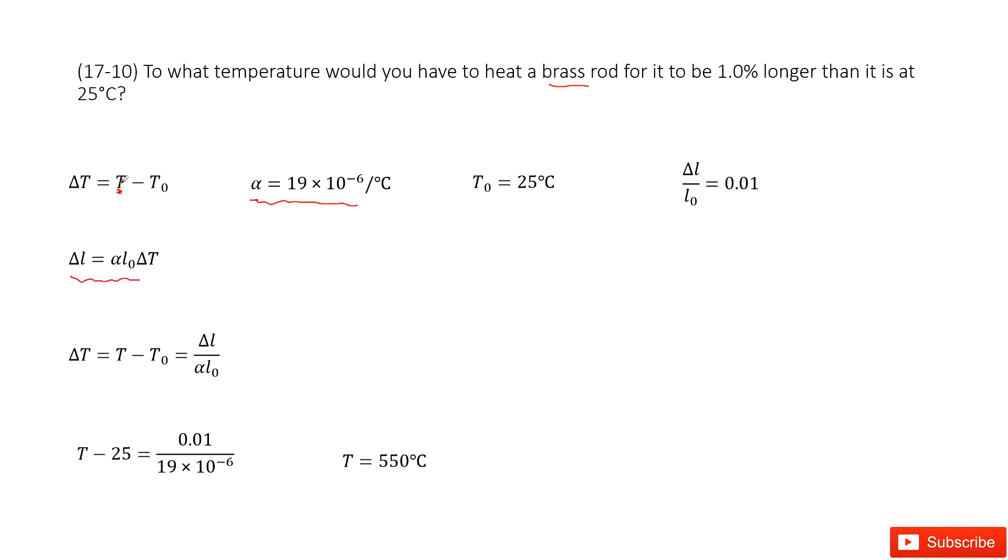It looks like if we input the delta T inside, we can find T. So in this case, you can say delta T just equals T minus T0, and also equals delta L divided by alpha L0. You just convert this function to get delta T equal to this part.